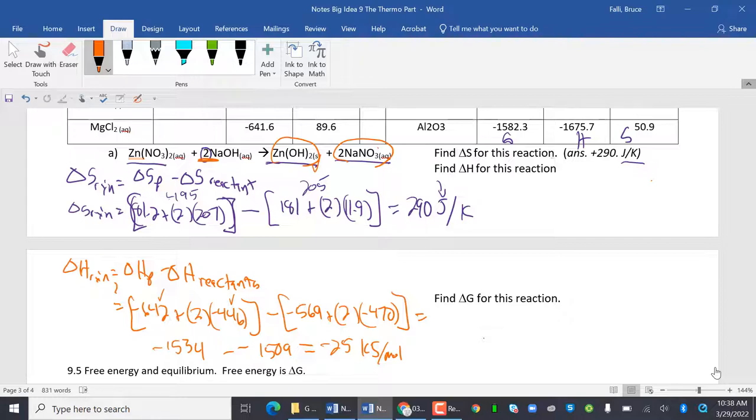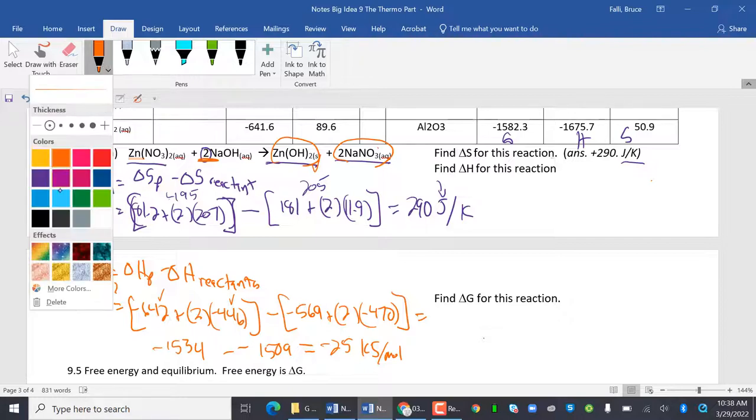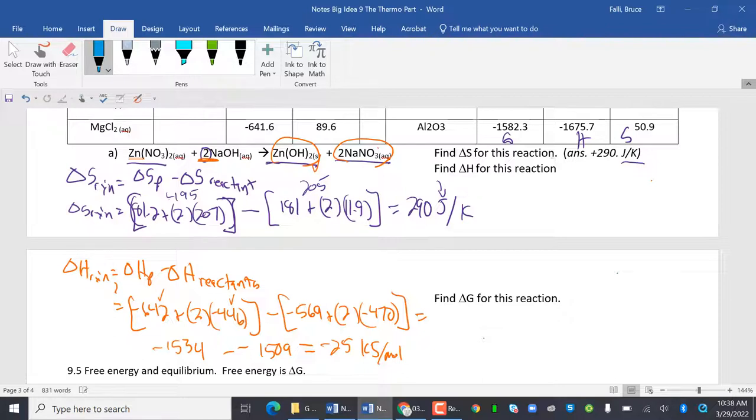So I get negative 1534 minus negative 1509. And when I do that, I have negative 25. And that's kilojoules per mole. So now we've got to find delta G, which is going to be pretty much the same thing.